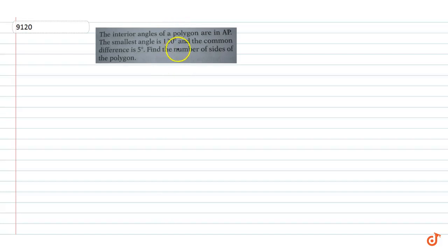In this question, the interior angles of a polygon are in AP. The smallest angle is 120 degrees and the common difference is 5 degrees. Find the number of sides of the polygon.